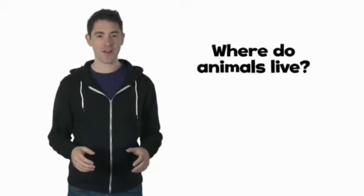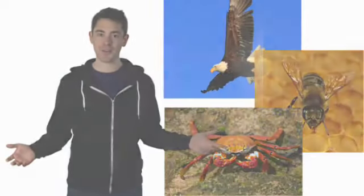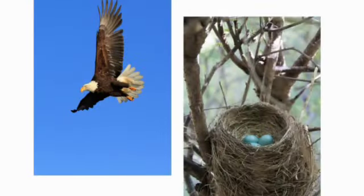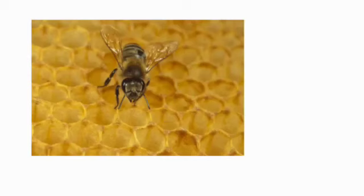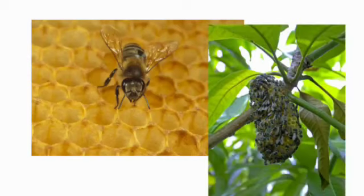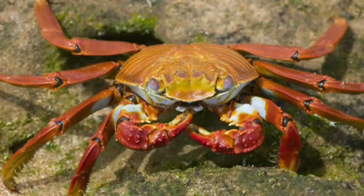Hi there. Are you ready for today's big question? Where do animals live? Look at these animals — where do they live? This is an eagle. Eagles live in big nests high in the trees. This is a honeybee. Honeybees make a hive for their home and make honey in the hive. This is a crab. Some crabs make their homes in old seashells. Different animals live in different homes.